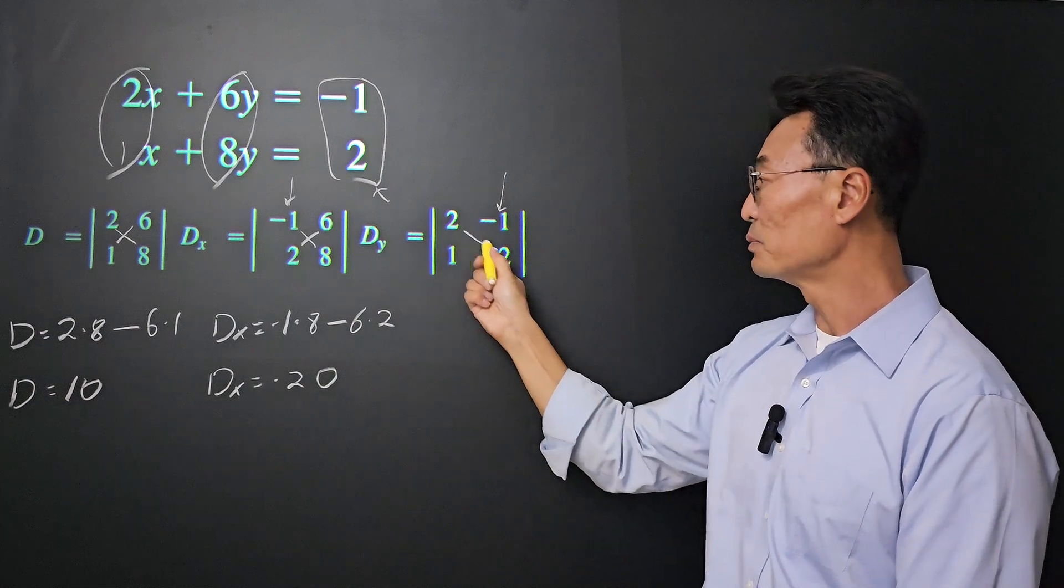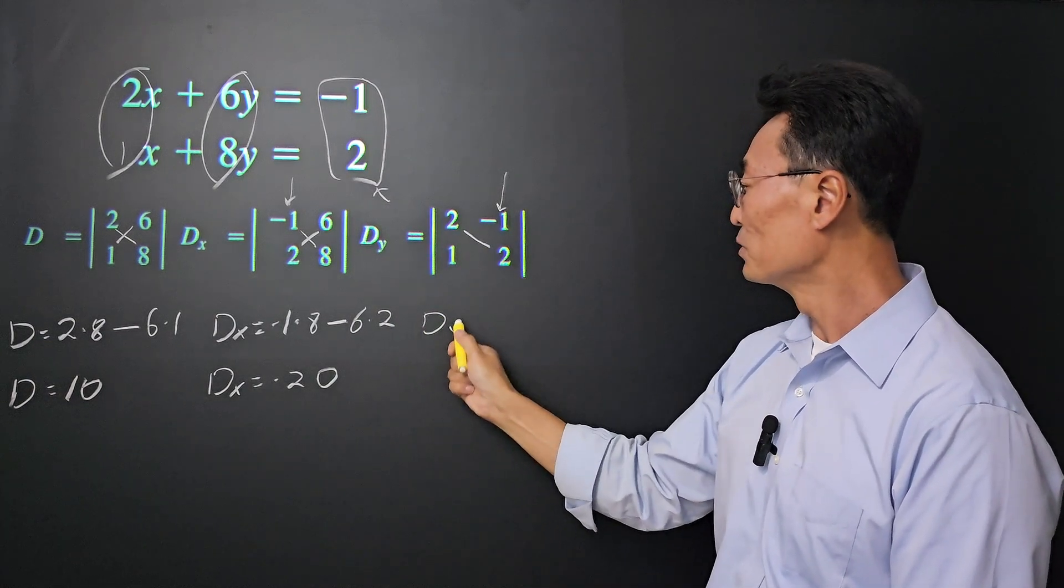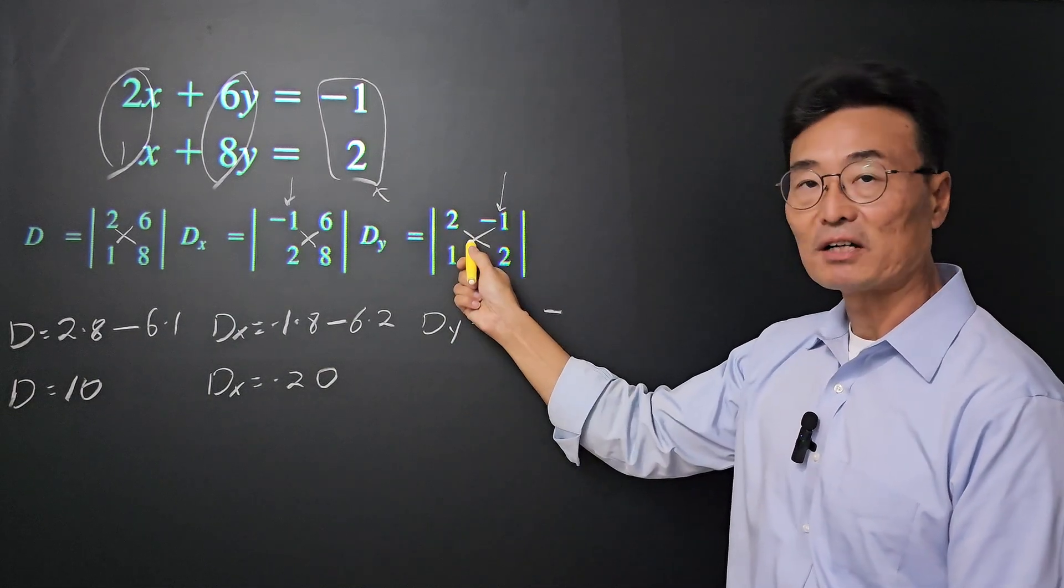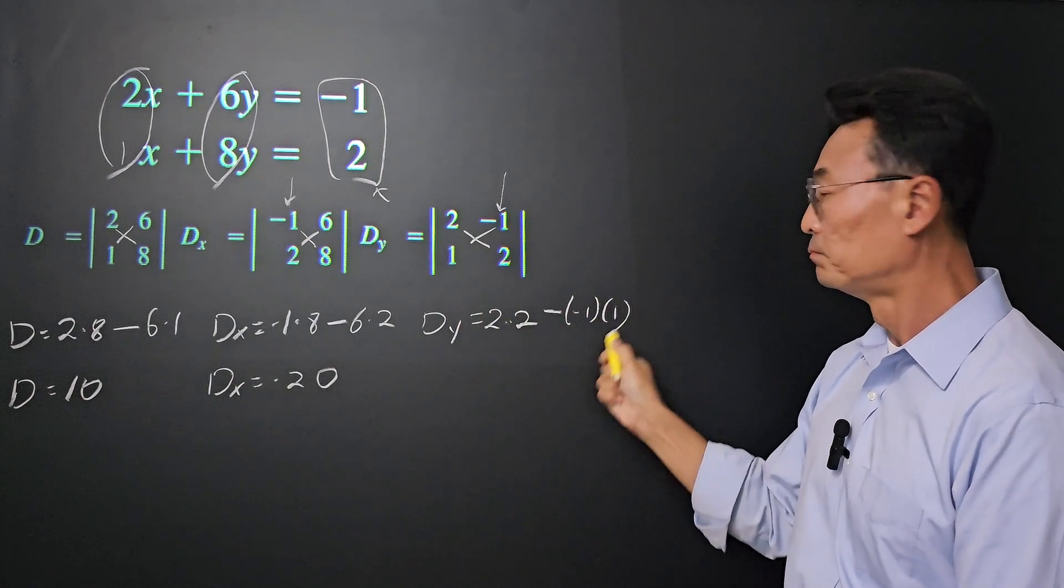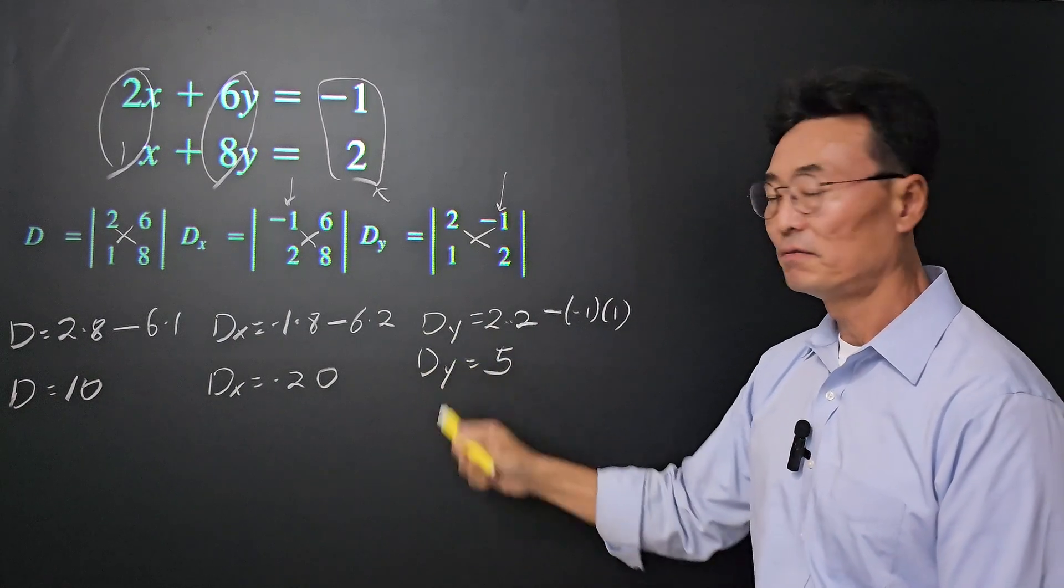To find the determinant, we multiply 2 and 2. So Dy equals 2 times 2 minus the other cross, which is negative 1 times 1. If you work this out, we get 5.